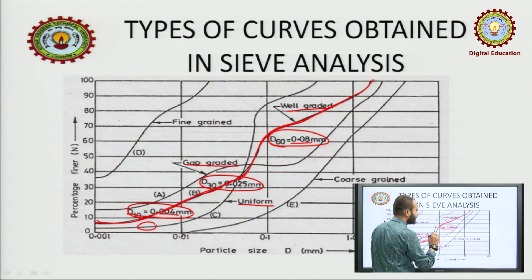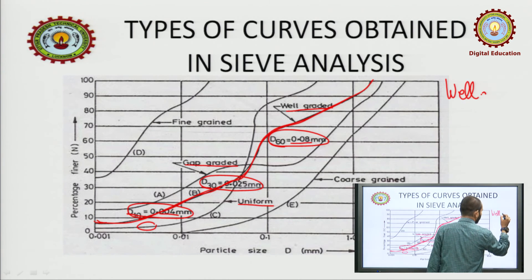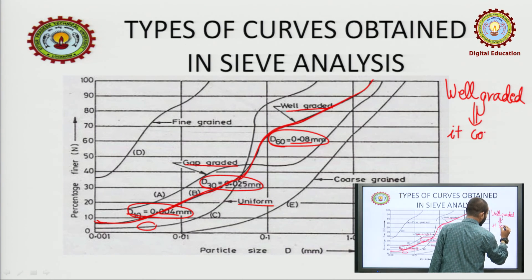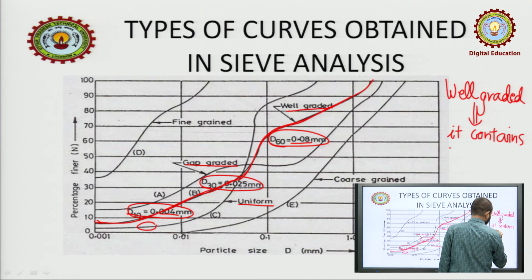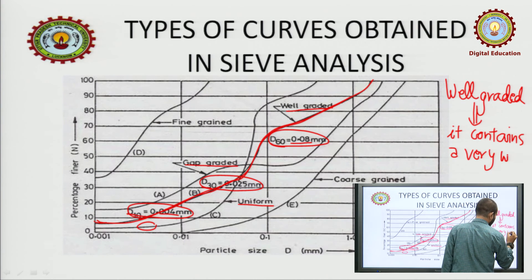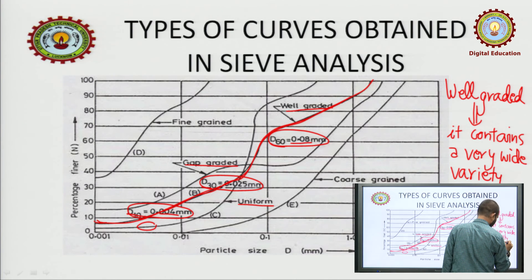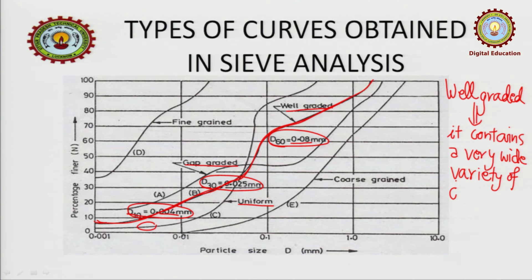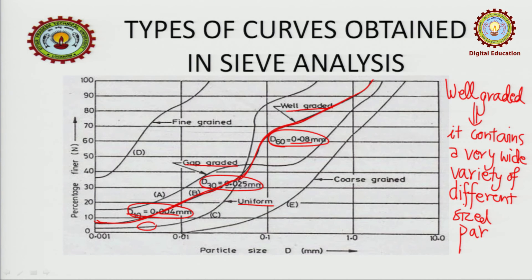This is called well graded — why well graded? Because it contains a very wide variety of different sized particles.